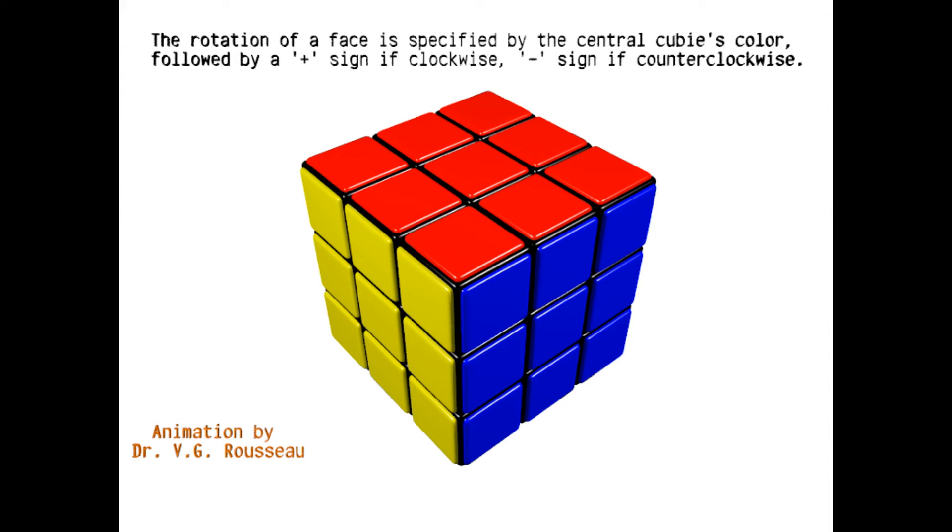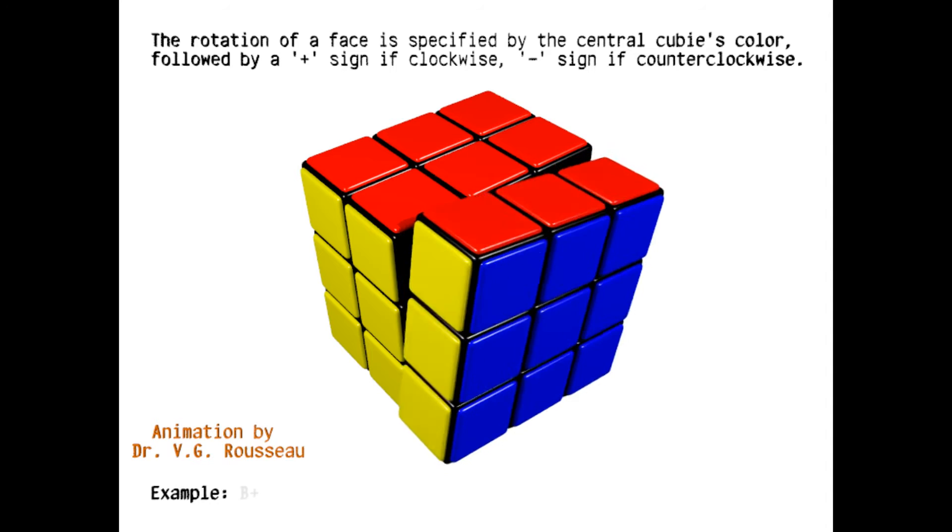The rotation of a given face by 90 degrees is specified by the color of its central cubie, and it will be said positive if the rotation is clockwise, and negative if it is counterclockwise. I will denote it by the first letter of its color, followed by a positive or negative sign. For example, in the present case, I will say blue positive.